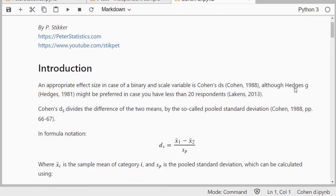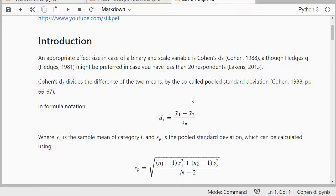There are some who might suggest that Hedges G might be preferred if you have less than 20 respondents. But this is the video on Cohen's D. There is another version for a scale variable, so watch out which one you're actually using.